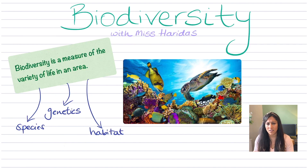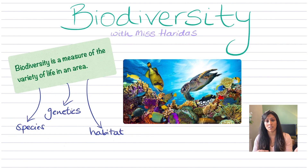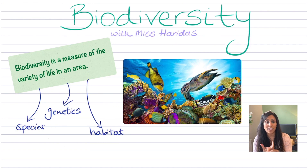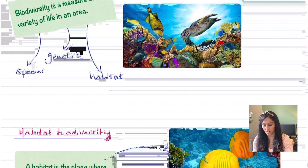So by definition, it's just a measure of the variety that you have in life. With biodiversity, it's really hard to just look at something and say I think this is way more biodiverse than this area over here. So we have to actually categorise biodiversity into three different sections: species biodiversity, genetic biodiversity, or habitat biodiversity.